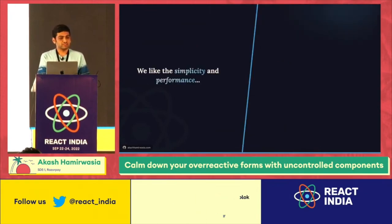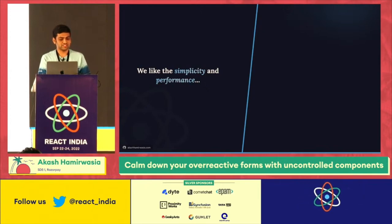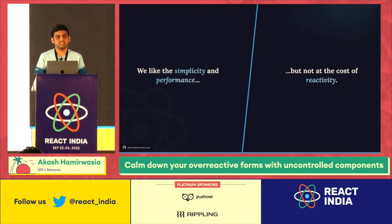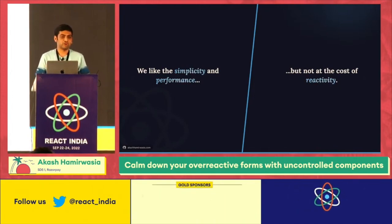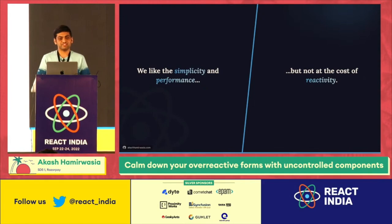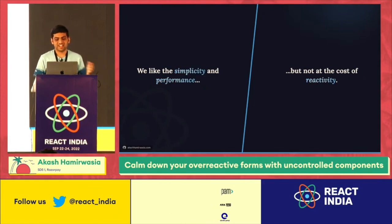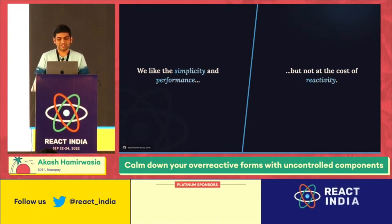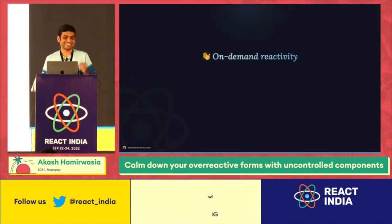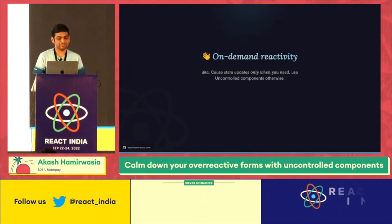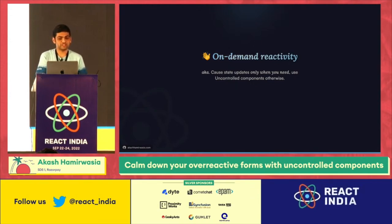So we are at two extremes. We like the simplicity and performance of uncontrolled components, but not at the cost of reactivity. With uncontrolled components we get nice performance and user experience but lose reactivity. With controlled components we get all the reactivity benefits but too many re-renders for a large form. How do we find a middle ground? Say hello to on-demand reactivity — just a fancy term I coined one hour back. It simply means: cause state updates only when you actually need to, and use uncontrolled components otherwise.